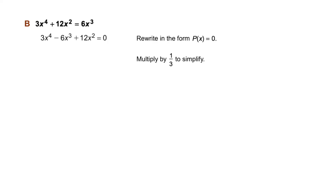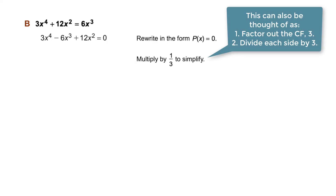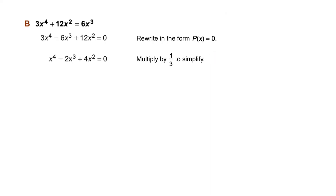Then we can multiply each term on both sides of the equation by one-third to simplify. This now becomes x to the fourth power minus 2x cubed plus 4x squared equals zero. Now we factor out our greatest common factor, in this case x squared, to write our equation as x squared times the quadratic trinomial x squared minus 2x plus 4 equals zero.